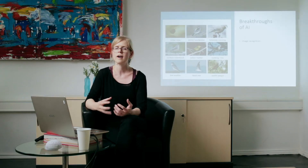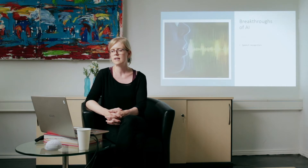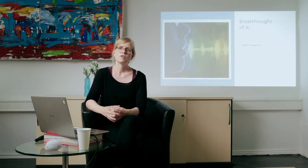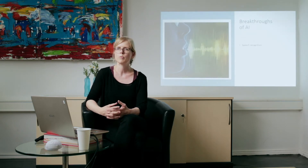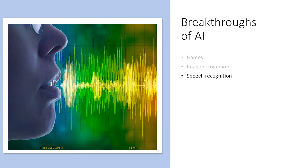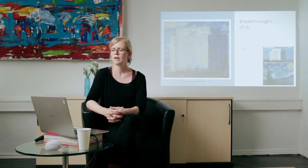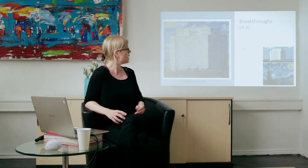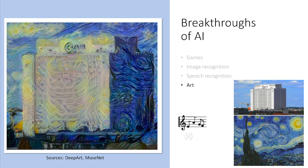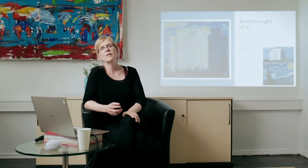Machine and deep learning are different — here the computer learns based on examples. For example, you give a computer images of cats and dogs, and the computer should figure out by itself how to discriminate between those categories. In classical machine learning, methods such as decision trees, random forests, or support vector machines are used, and these mostly require some prior feature extraction. Deep learning relies on deep artificial neural networks, which can learn complex representations of the data — and this is the main reason why deep learning algorithms are so successful today.